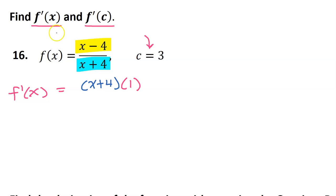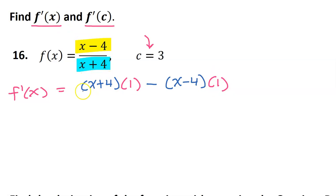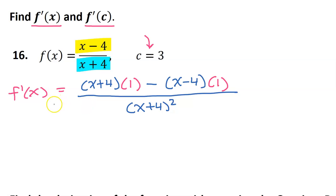Low d high less high d low — so minus the top function. Then it's time for the derivative of the bottom function, which is just going to have a derivative of 1. Draw the line and down below, the bottom squared will go — so x plus 4 squared. So this is an expression for the derivative of f.